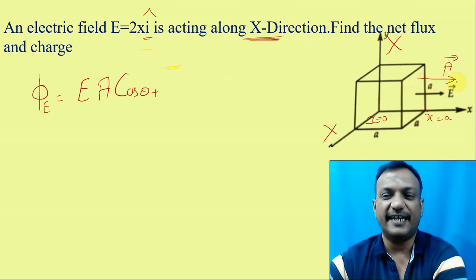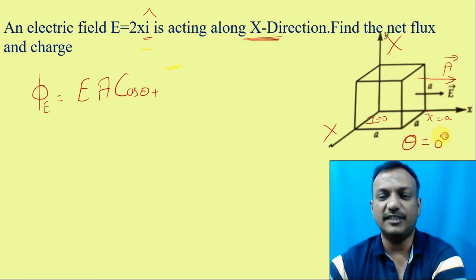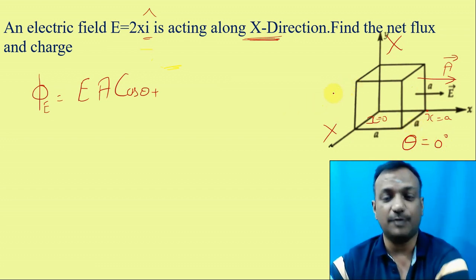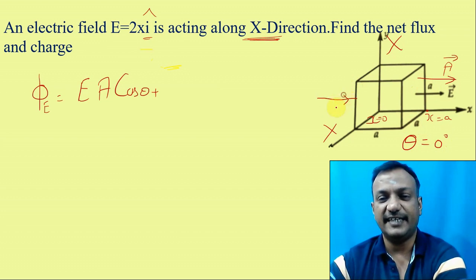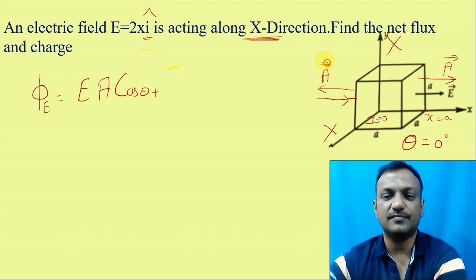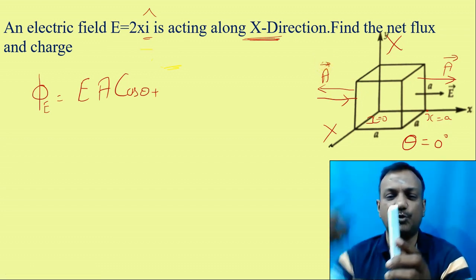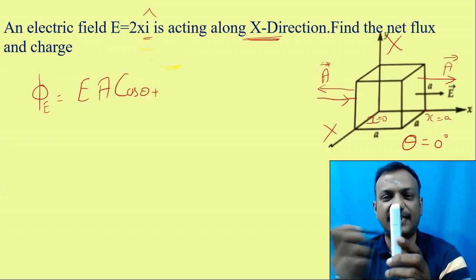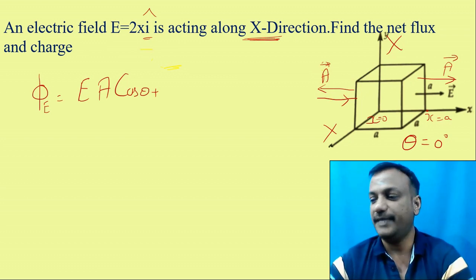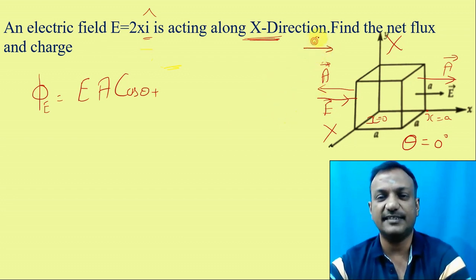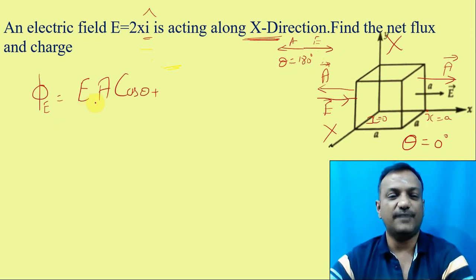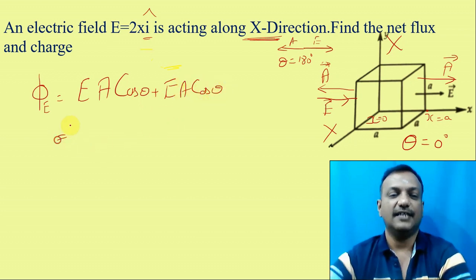When the electric field and area vector are acting in the same direction, the value of theta is zero. In the side surface, the electric field is there. If I draw a perpendicular to come to a vector on that surface, it will act like this. So the area vector will be acting like this.